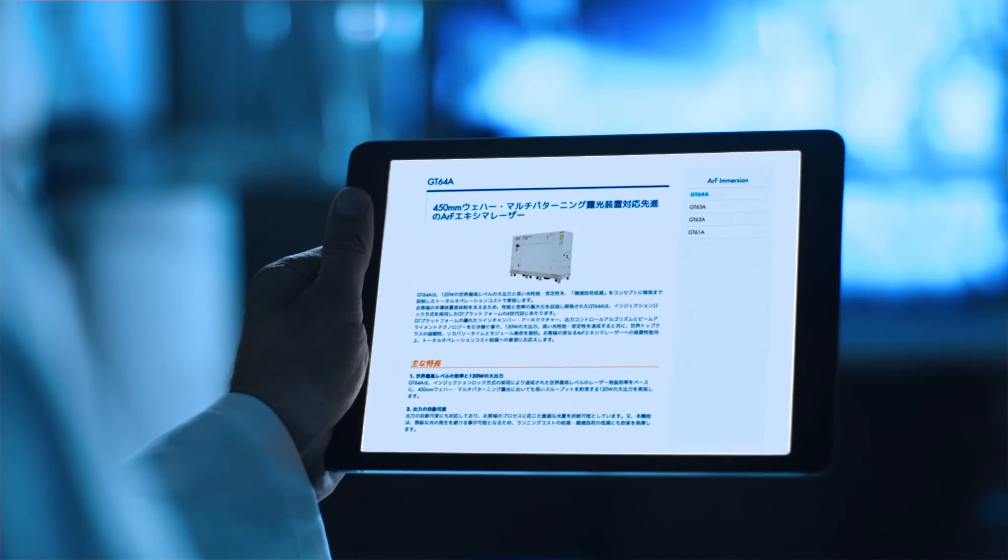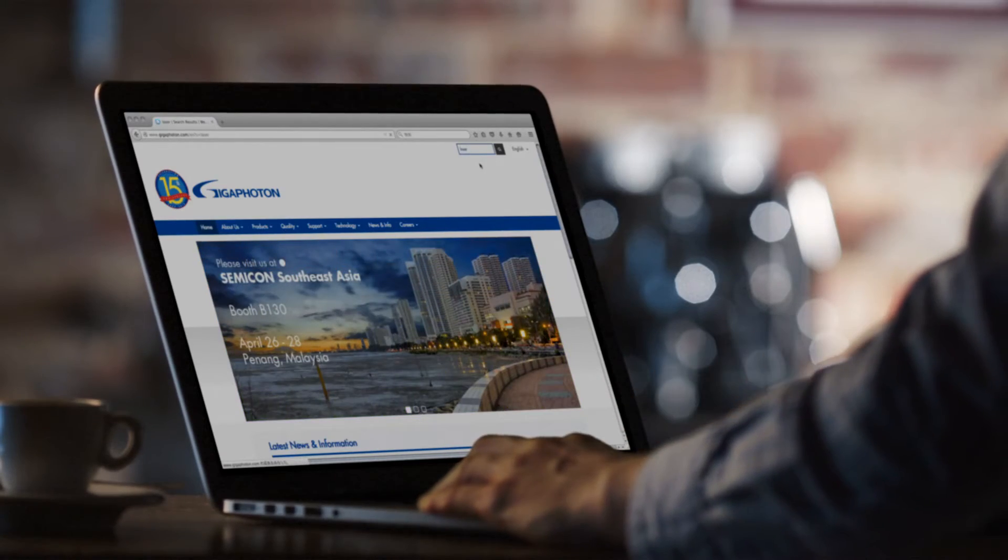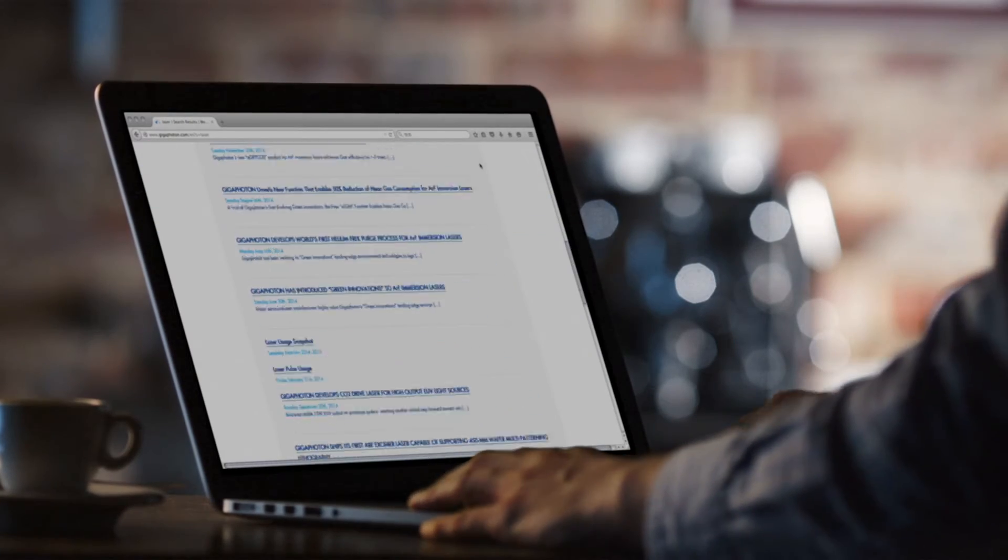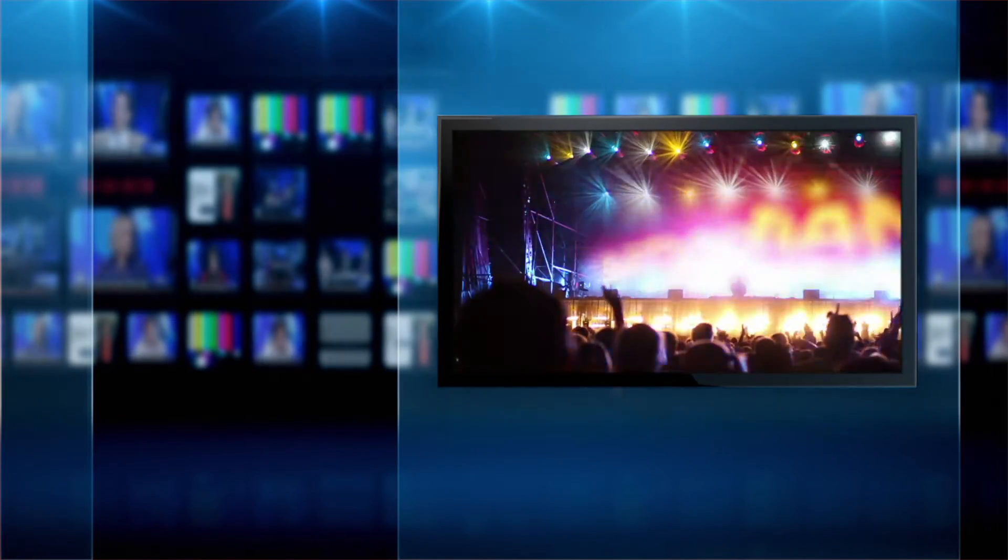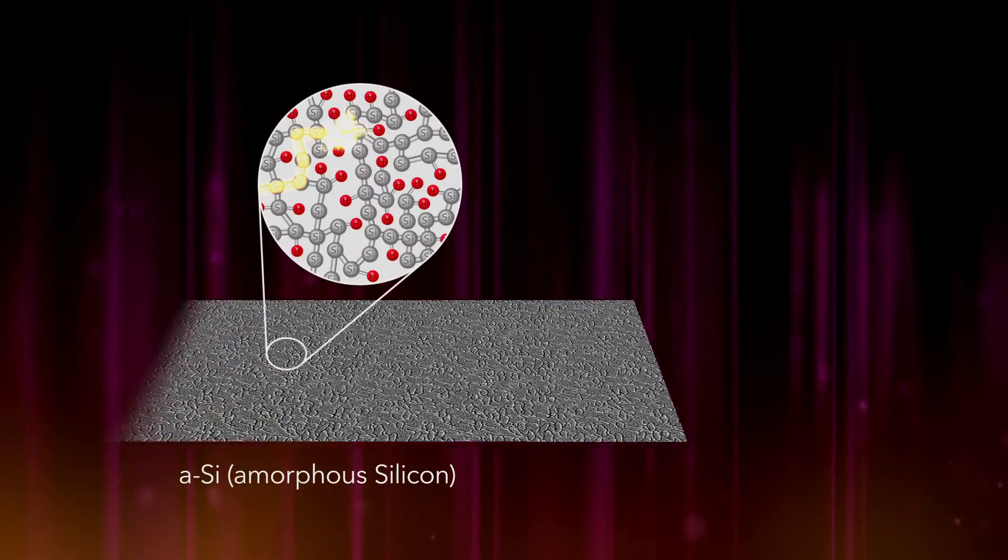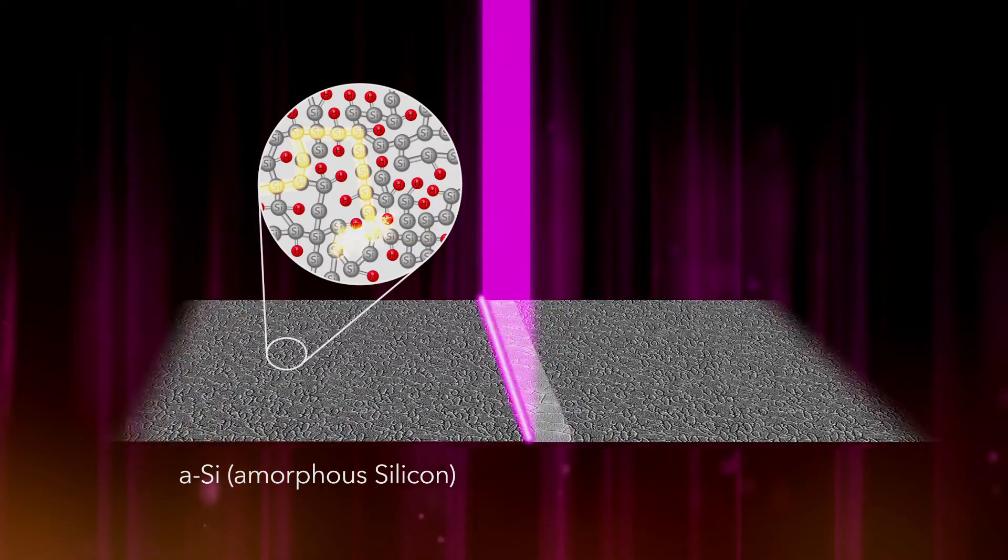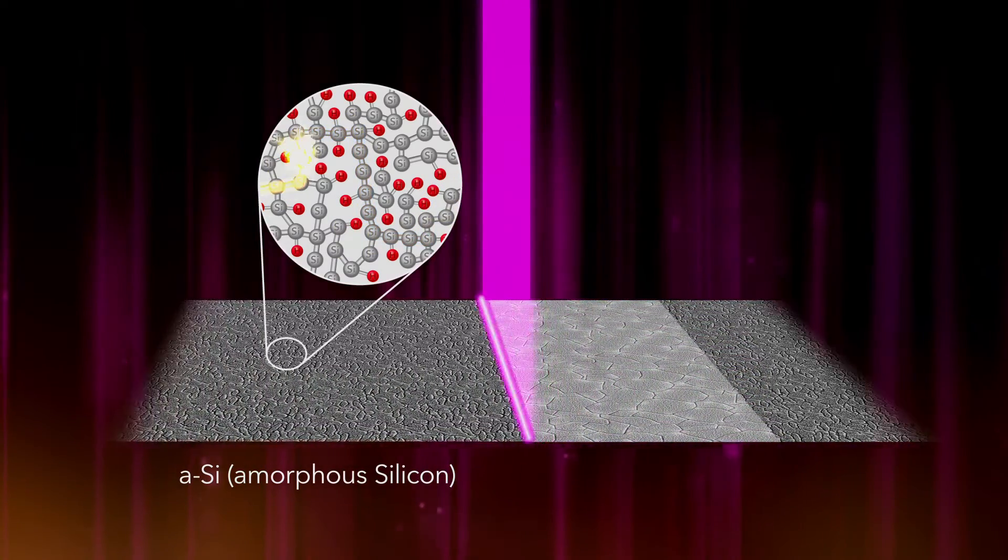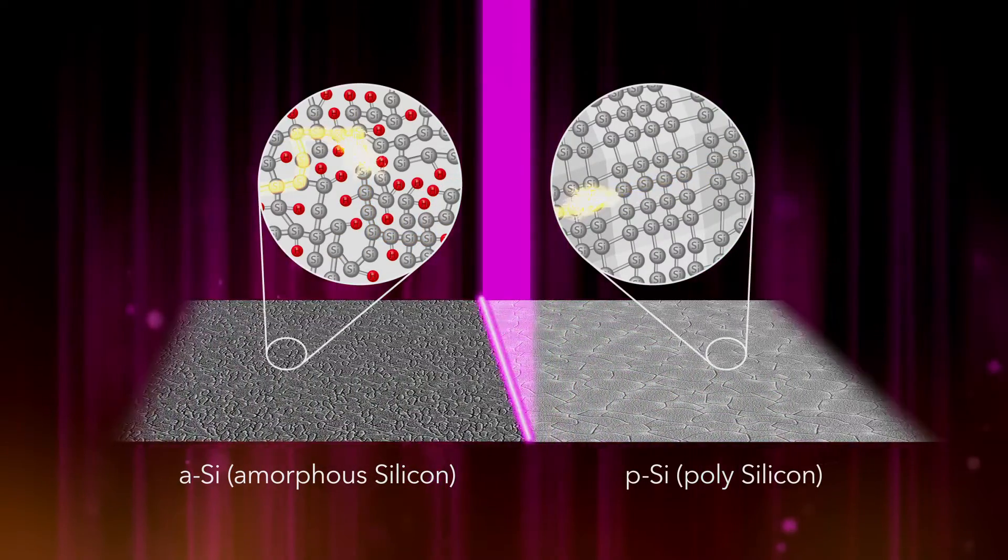Gigafoton's Eximer laser is effective for low-temperature polysilicon TFT manufacturing, which is a core component of LCD and OLED. It is used for a process called laser annealing to transform amorphous silicon coating on glass substrate into polysilicon, which has a more than 100 times faster electron transfer rate.